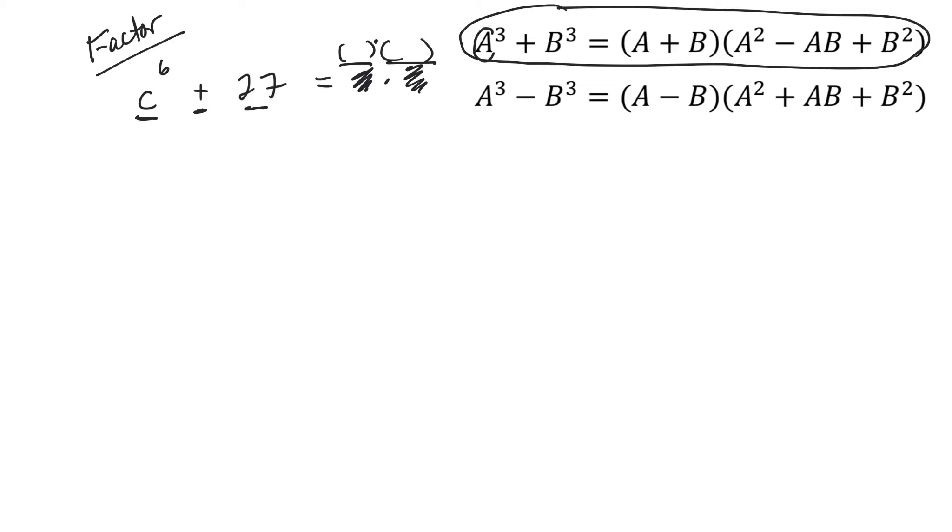But what I need to know is what A is and what B is. So what I like to do is change the C to the 6 to something cubed. Right, so I match that cube there. Then whatever's in here is going to be my A, and then same thing here, I'll have something cubed, whatever in there is going to be my B. Then I can follow this pattern over here.